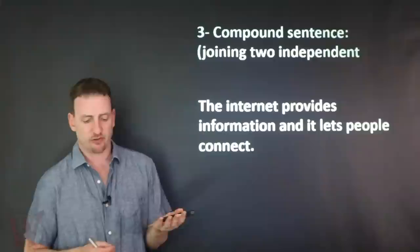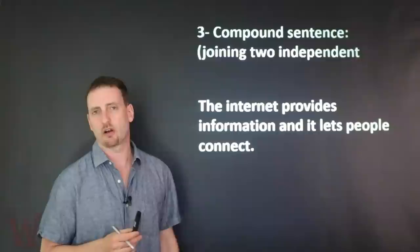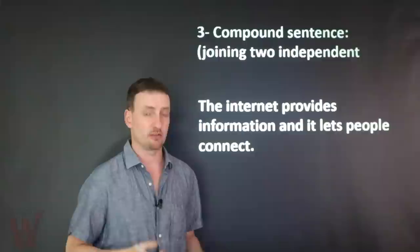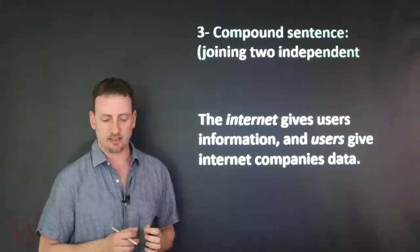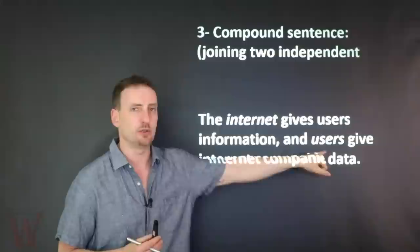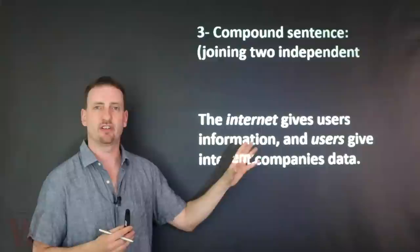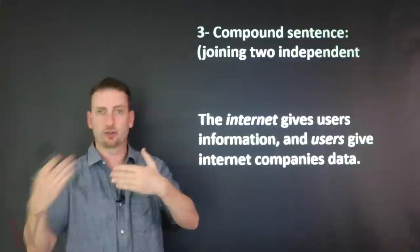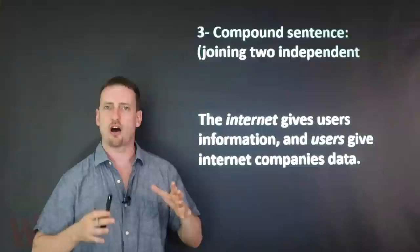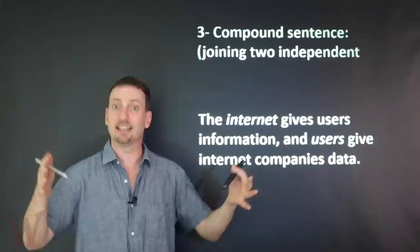Short example: 'The internet provides information and it lets people connect.' Short clauses — you don't need the comma. Whenever you don't need a comma, don't put one. Less is more in writing. But here: 'The internet gives users information, and users give internet companies data.' Even though it's short, I use the comma because I have two different subjects, different objects, and information going in different directions — two complete, independent ideas.